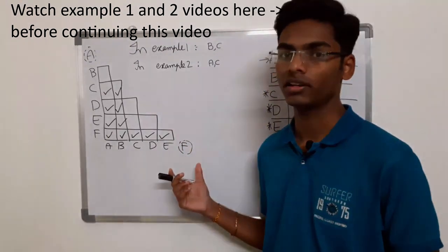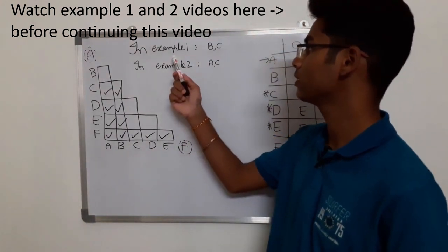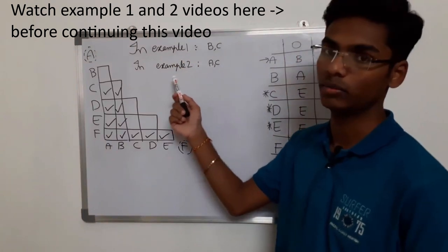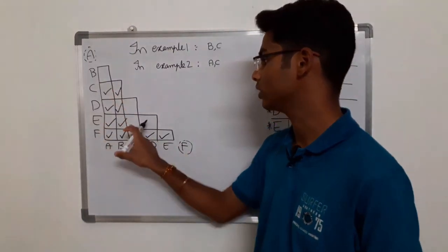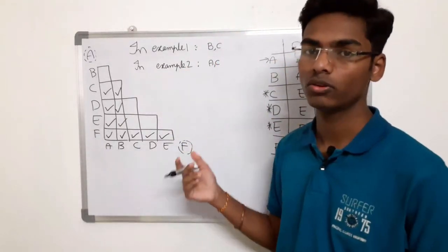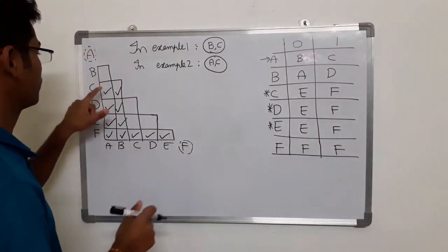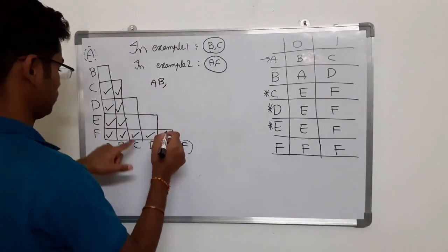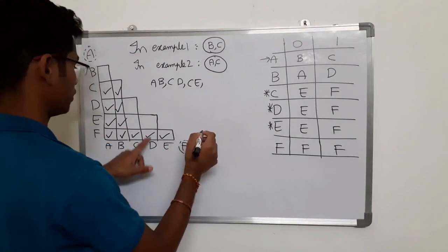Comparing the three examples: everything is the same up to step three. The only difference is that in the earlier two examples we had only one unmarked cell — BC in the first example and AC in the second. But here, after completion of step three, we have four unmarked cells: AB, CD, CE, and DE.